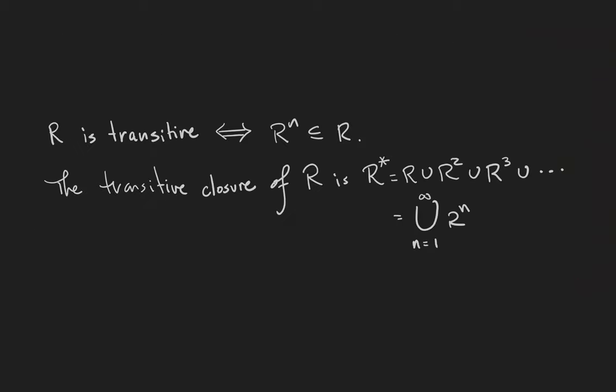Another way to define transitivity is by saying that R has to contain all of its self-composites in order to be transitive. Therefore, the transitive closure is going to be obtained by just taking all of those self-composites together.